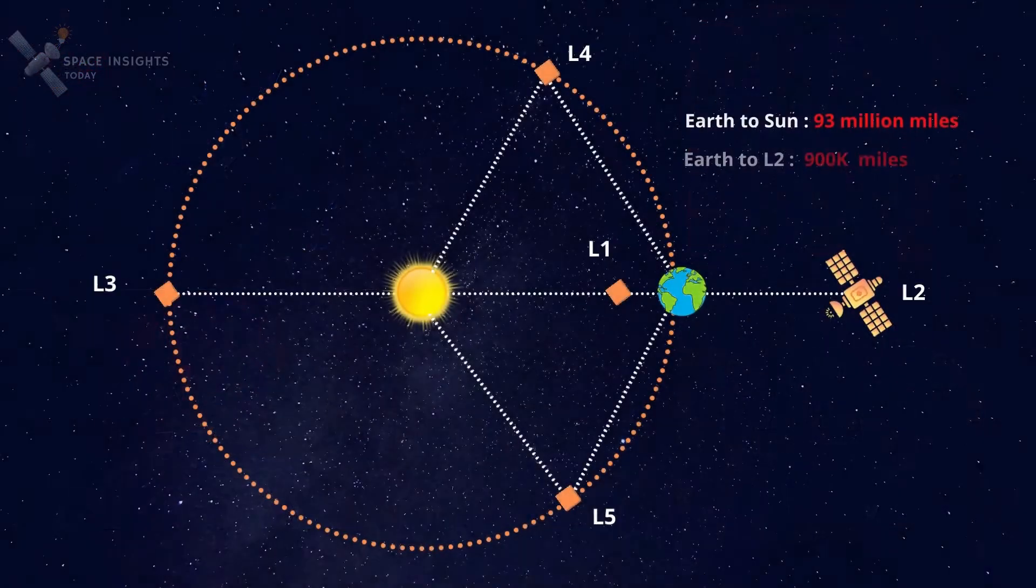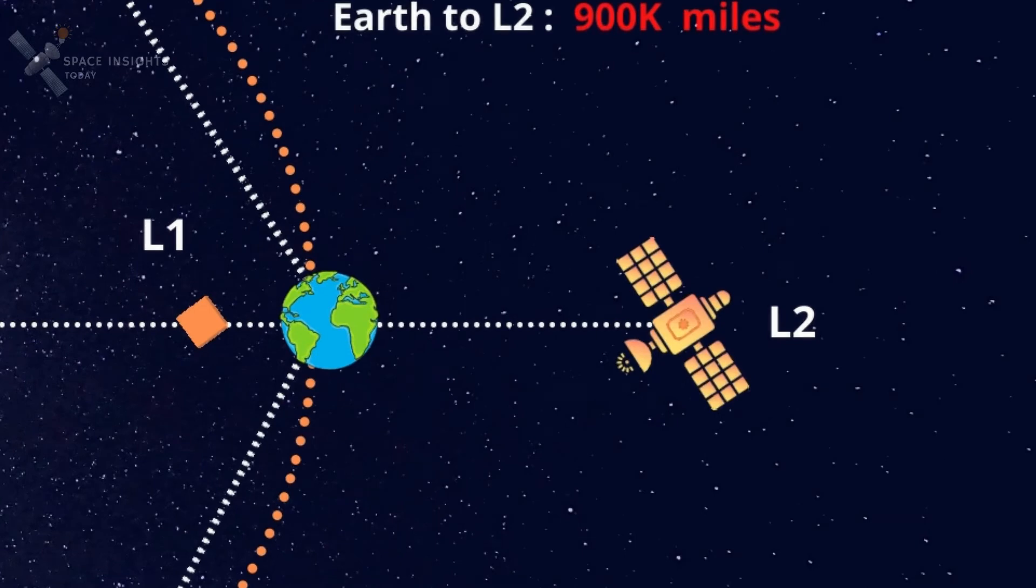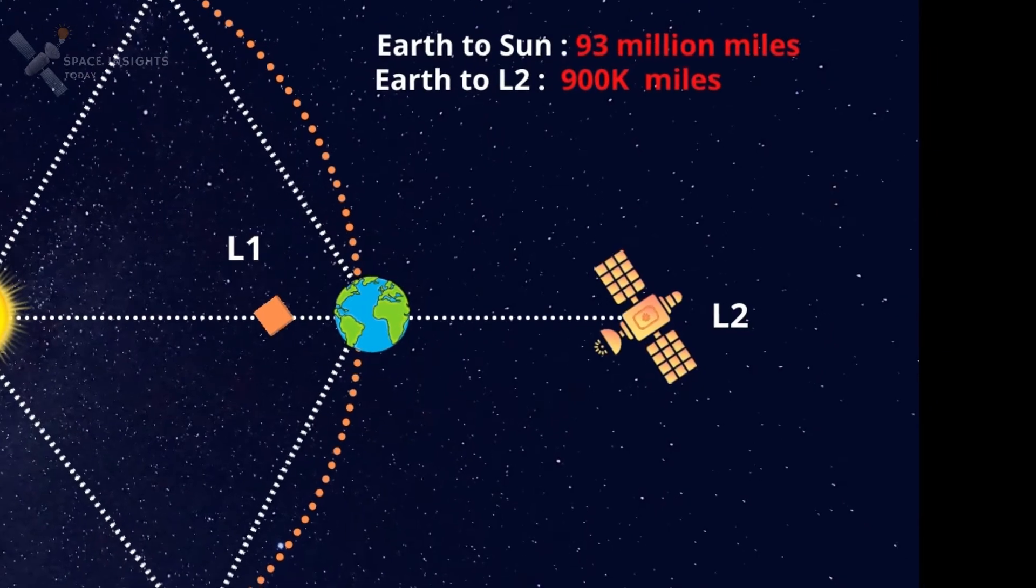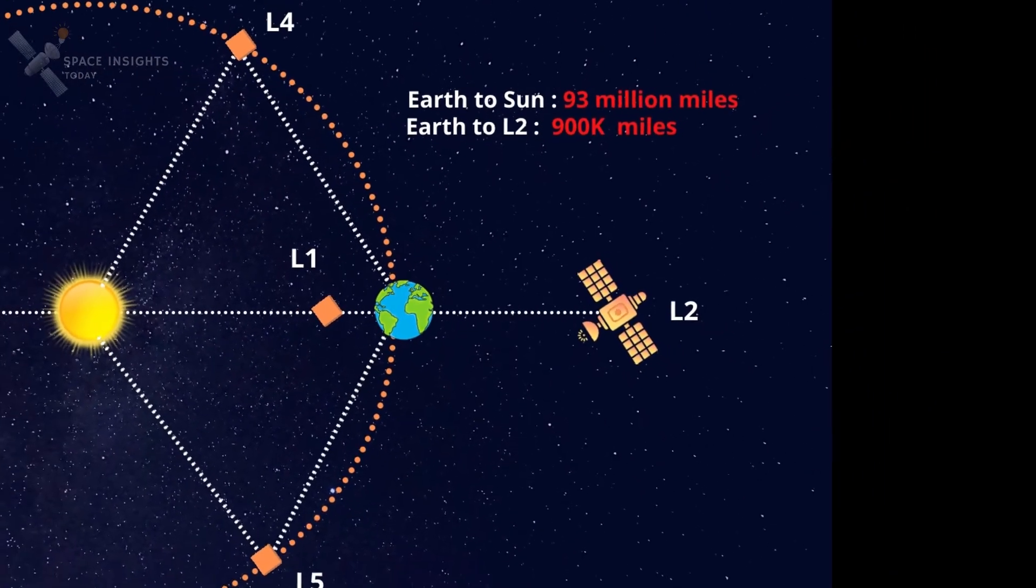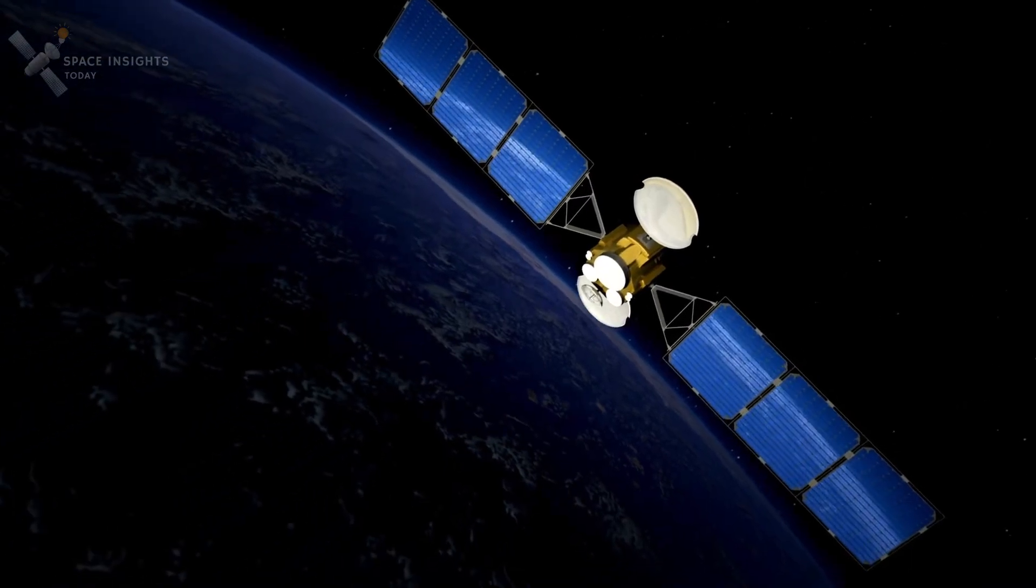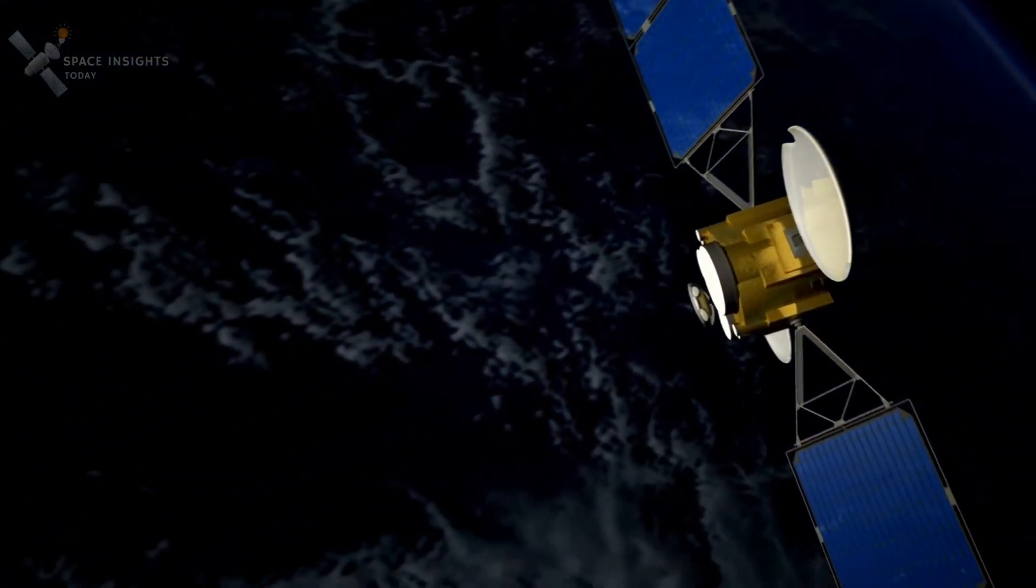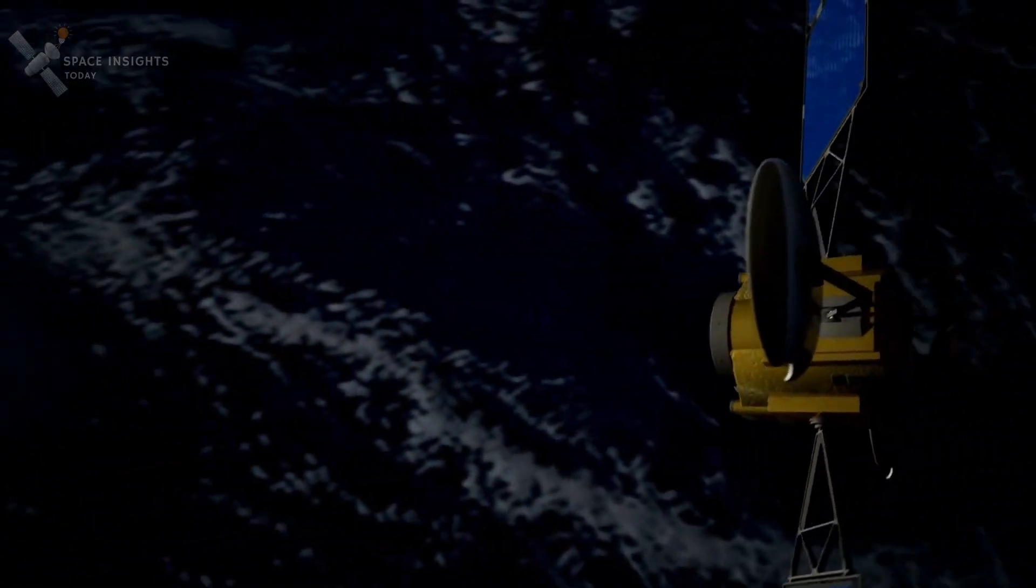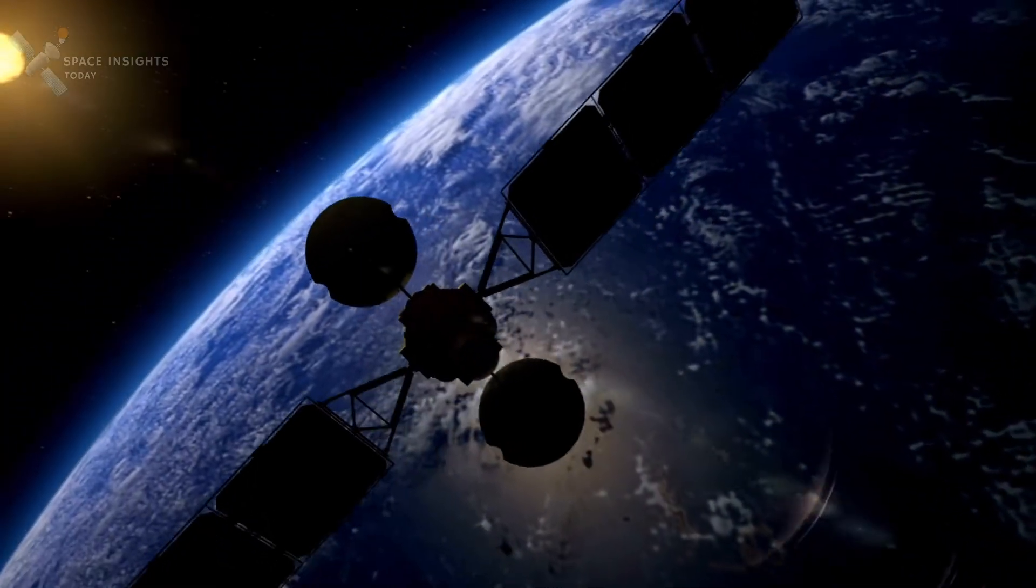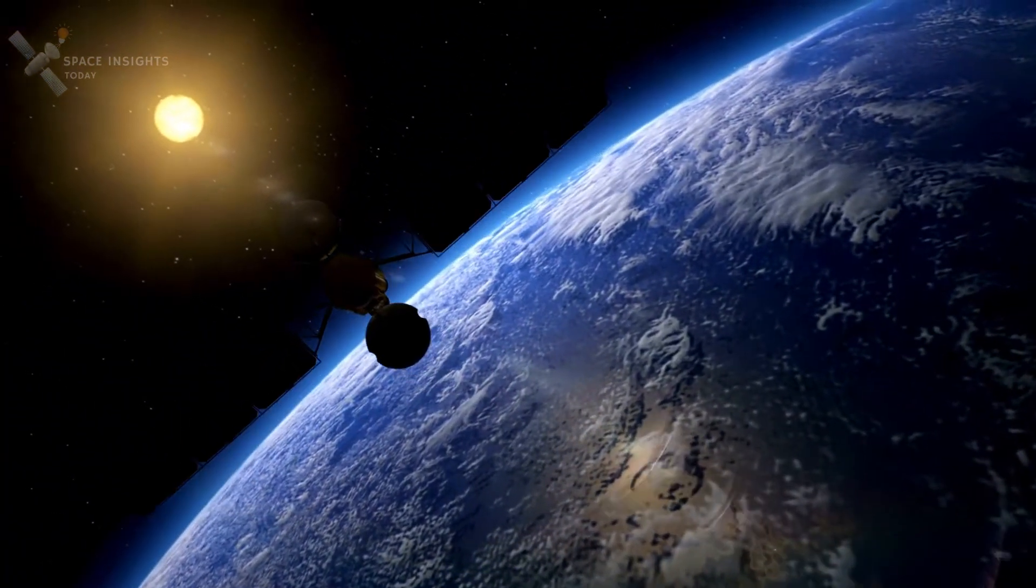When we place spacecraft over L2 point, which is roughly 900,000 miles behind the Earth, as viewed from the Sun, it is a great place from which to observe the larger universe. Since spacecraft would not have to make constant orbits of the Earth, which result in it passing in and out of the Earth's shadow, and causing it to heat up and cool down, resulting in distorting views, the L2 point provides a much more stable position for distort-less views for solar observatory missions.